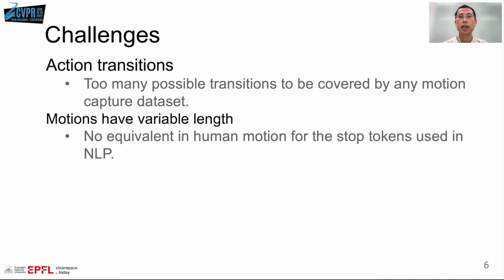There are two main challenges in our task. The first one is that there are too many possible action transitions to be covered by any motion capture dataset. The other one is that motions can have variable length. Although in Natural Language Processing, NLP, a stop token is often used to account for this, such a stop token does not exist in human motion.